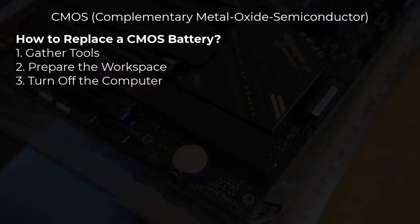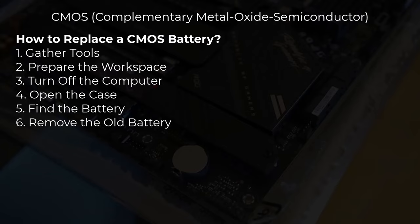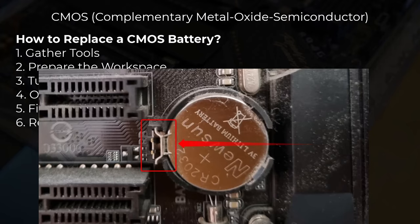Step 4: open the case. On a desktop, remove the side panel; on a laptop, you may need to remove the bottom panel. Step 5: find the battery — locate the CMOS battery on the motherboard; it's a small, silver coin-shaped battery. Step 6: remove the old battery carefully — it might be held in place by a small clip; press the clip gently and the battery should pop out. Step 7: insert the new battery with the same orientation as the old one.